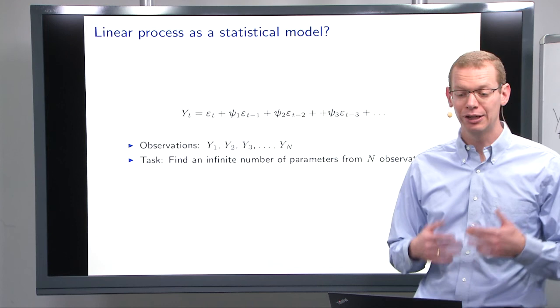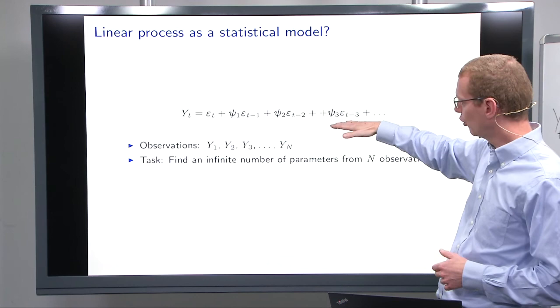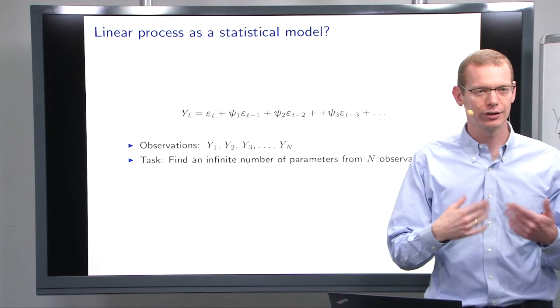For the next part, we're looking at a linear process as a statistical model. So what we looked at before was to have yt as an infinite sum of weighted previous epsilons. And that's all fine.